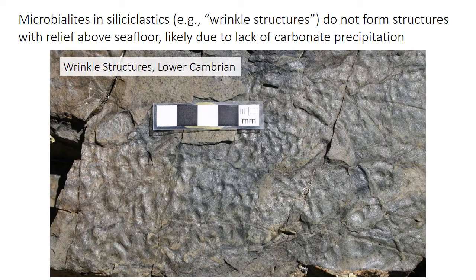Microbialites can also form in siliciclastic rocks, but they don't produce large structures with relief like stromatolites or thrombolites, likely because the carbonate cementing step is absent. In siliciclastics, you instead get small structures like wrinkle structures, just from the trapping and binding of sediment by the biofilm. Wrinkle structures are low-relief wrinkles on the bed surface — they can look a little like wave ripples, but are smaller, rounder, and much more irregular, with no continuous crest, just a bunch of little wrinkly bubbles over the surface.